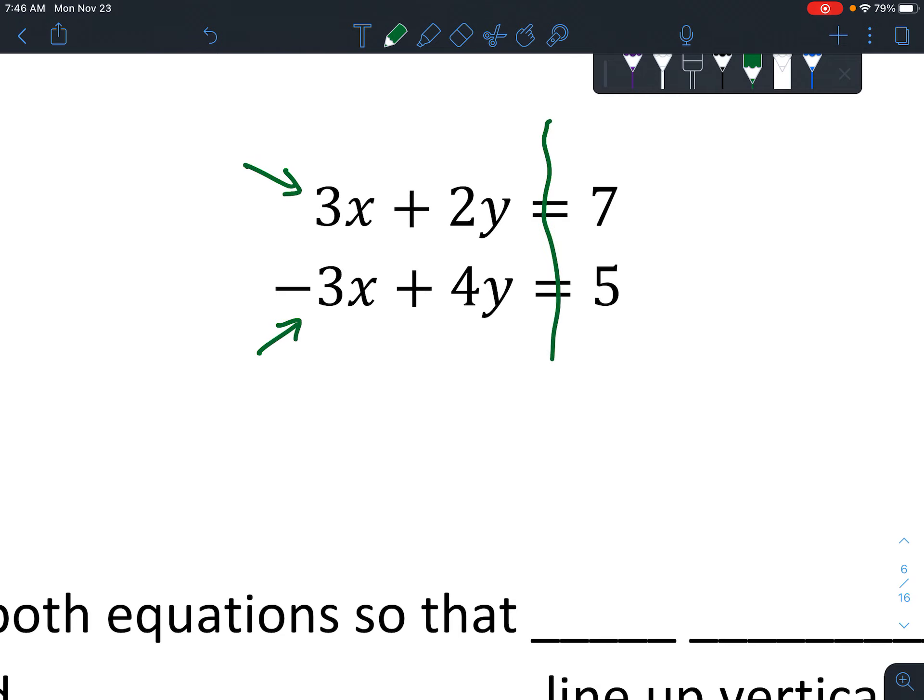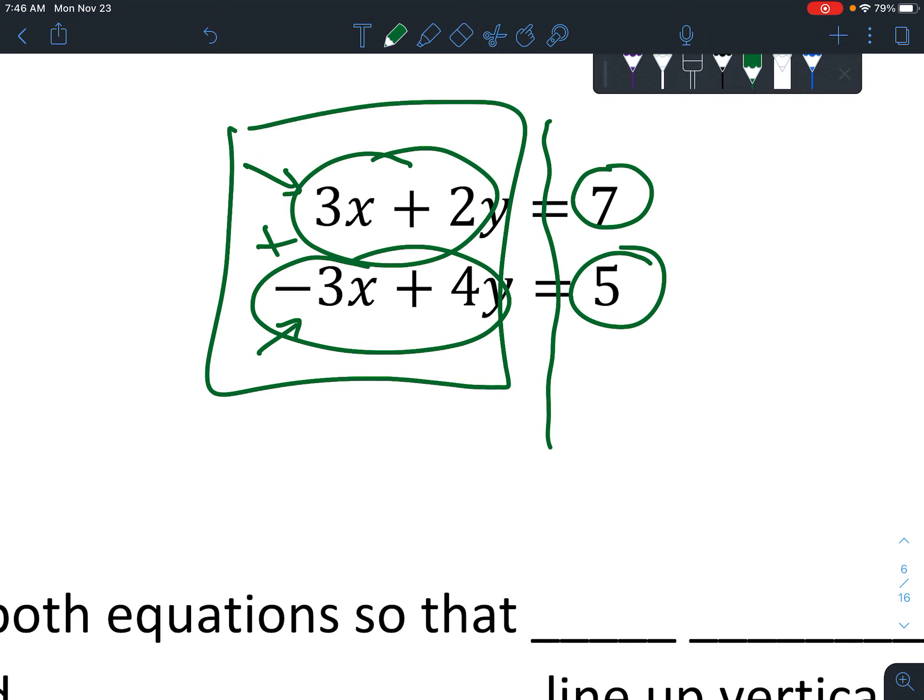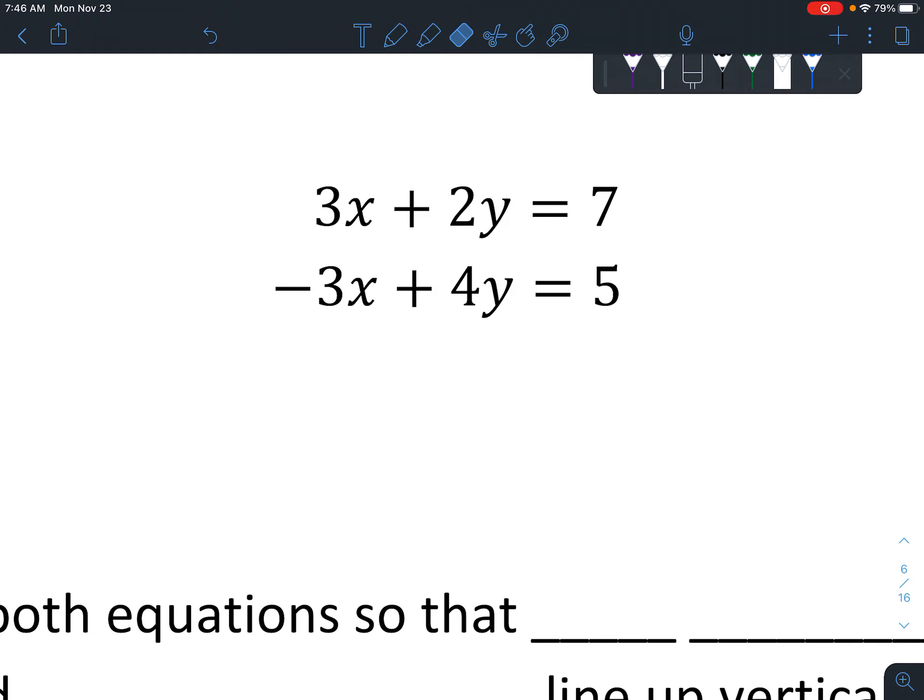Now the whole idea behind this is that if this side equals this, and then this also equals this, that means if you were to add this whole section together, then that whole section equals this whole section added together. So it looks a little confusing, but just remember that you can line them up, and if one side's equal and the other side's equal, you can add basically vertically now.